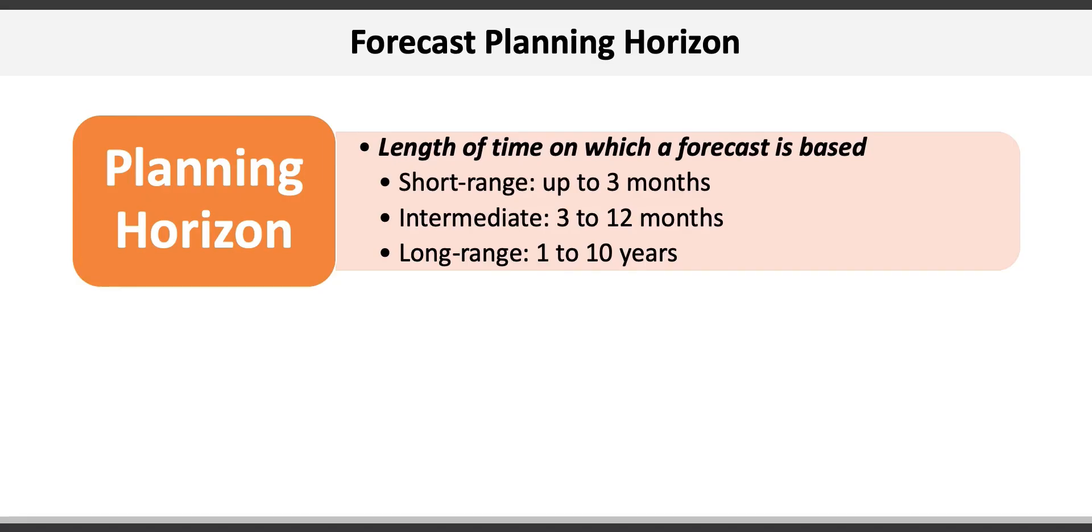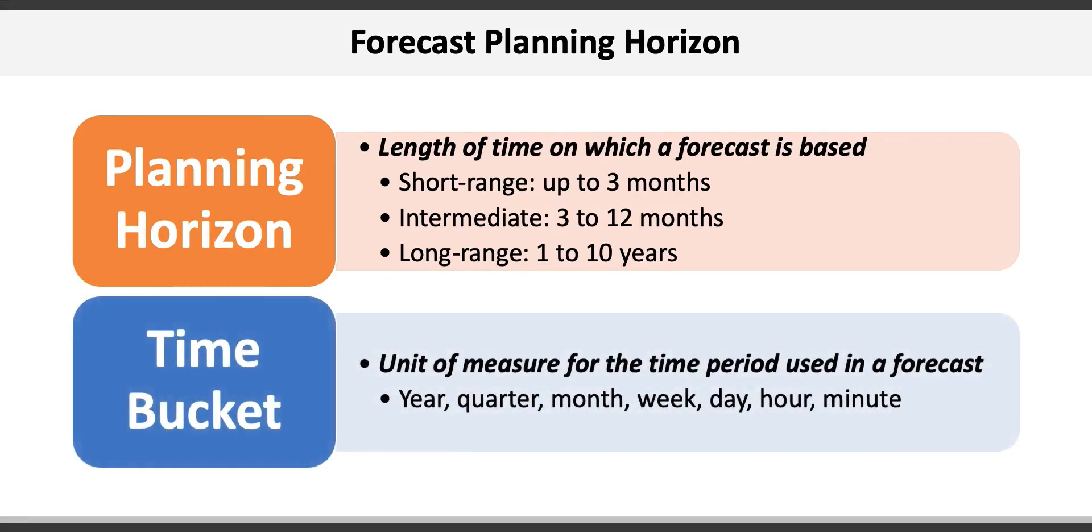There's also something we call a time bucket, which is simply the unit of measure for the period used in the forecast. We can forecast for an entire year, month, week, or even minute, depending on what we want to forecast. For example, Ford might forecast auto sales by month, and a steel manufacturer might forecast power consumption by the minute.